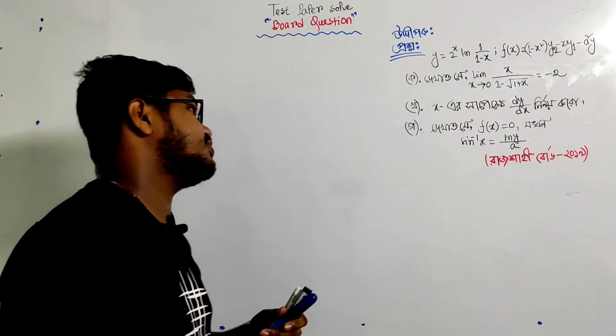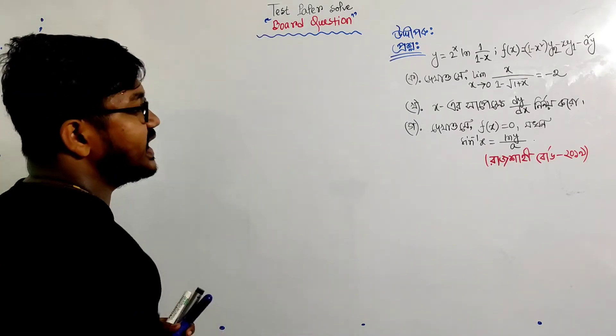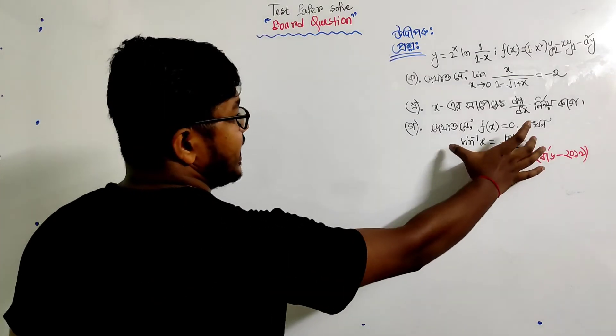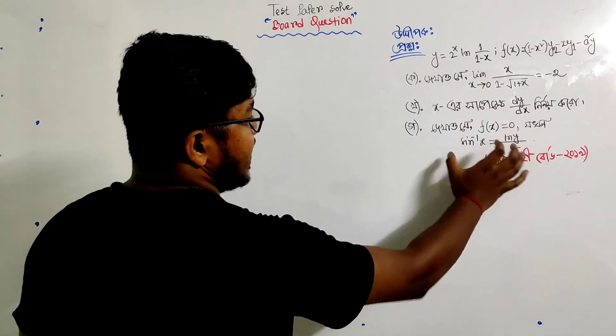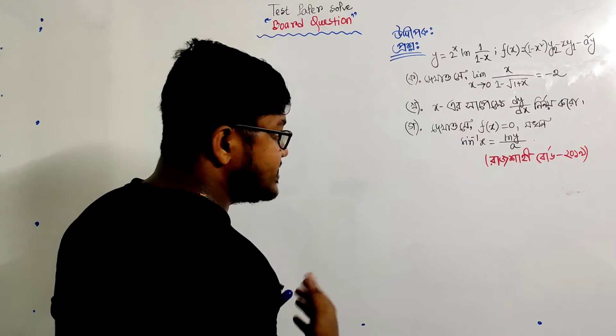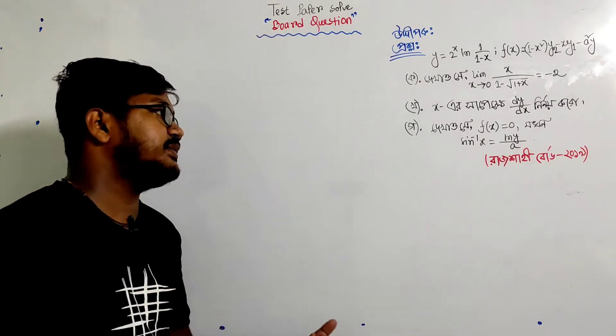For example, if y equals the sine of x, then we take ln of both sides to get ln y equals ln of sine x.